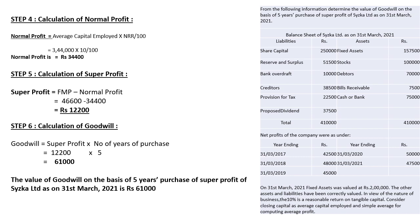Step 5 — calculation of super profit. Formula: Super Profit = Future Maintainable Profit − Normal Profit = 46,600 − 34,400 = 12,200. Super profit is 12,200.